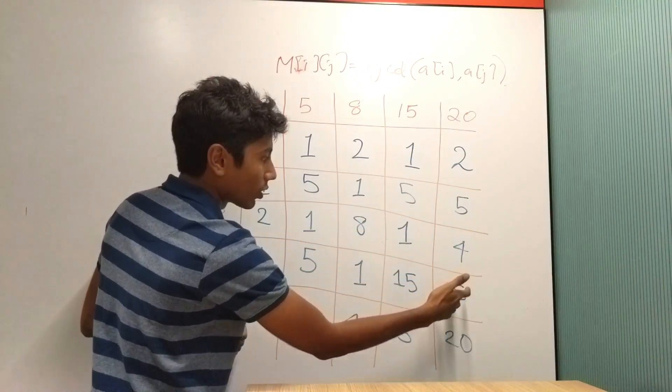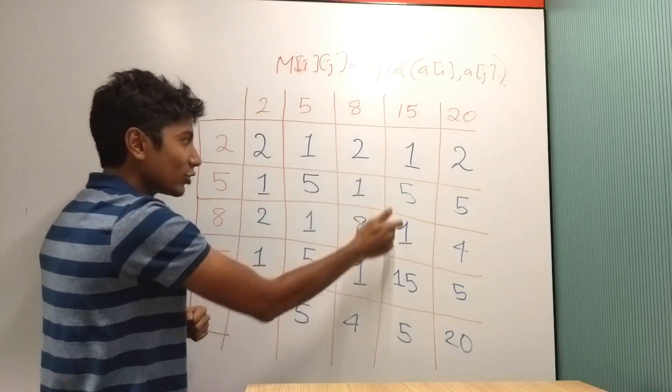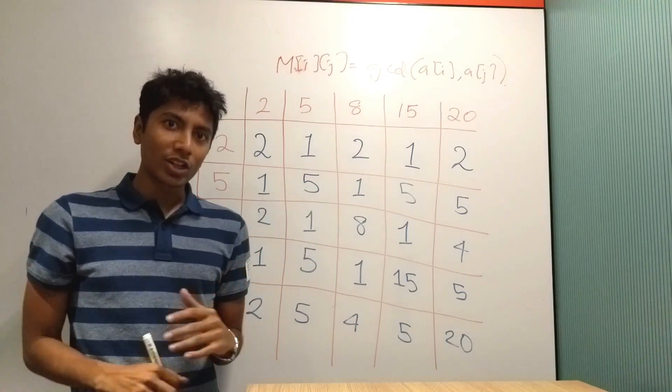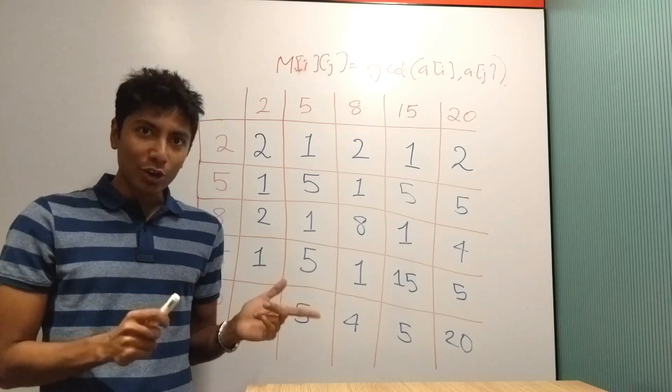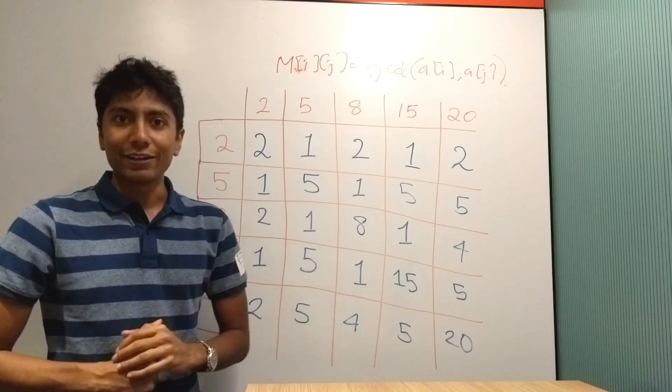Instead I will shuffle the matrix and convert that to an array. So all the elements will be written out in a random order, maybe 2, 1, 2, 1, 2, 5, 4, 5, 20, and so on. I'll go around in a spiral, convert it into an array and then send it to Rachit, and let's see if we can find out the original elements using this shuffled array.